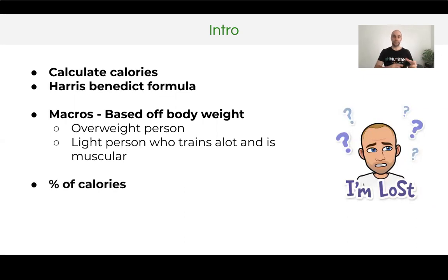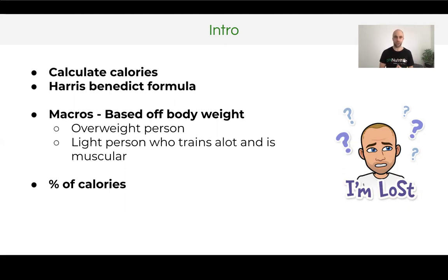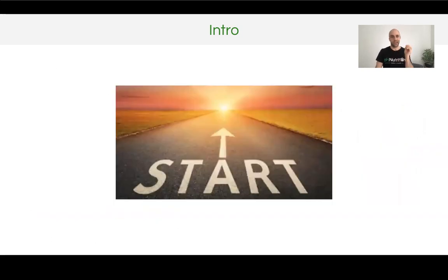What we do instead is base your macros off a percentage of your calories. So rather than something like 1.6 grams per kilo of body weight for protein, or 5 grams per kilo for carbohydrates, we prefer to use percentages. This allows a little bit more customization and makes it easier to adjust things. Just remember there are issues with everything — all calorie calculators and formulas give you a starting point, and we want to make that starting point as accurate as possible.